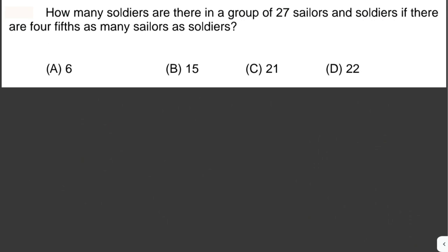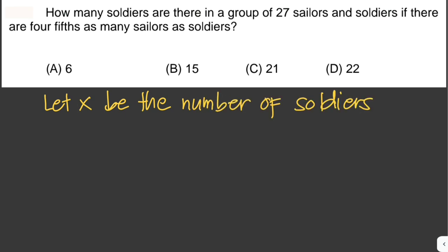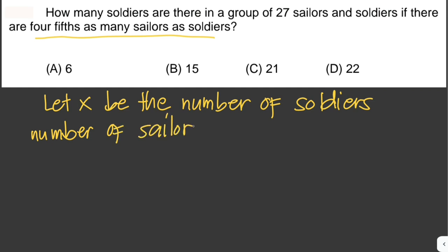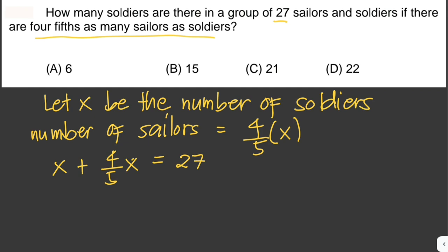How many soldiers are there in a group of 27 sailors and soldiers if there are 4/5 as many sailors as soldiers? We let x be the number of soldiers. Since there are 4/5 as many sailors as soldiers, the number of sailors equals 4/5 of x. The total is 27, so soldiers plus sailors equals 27.